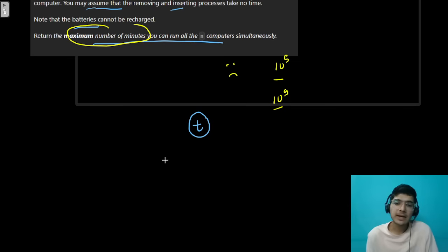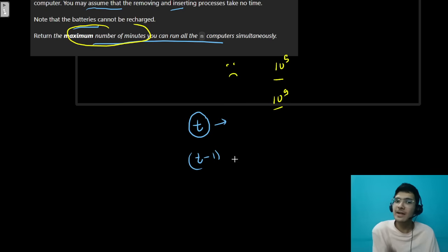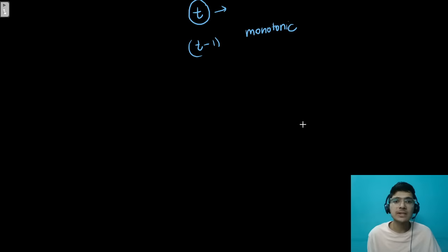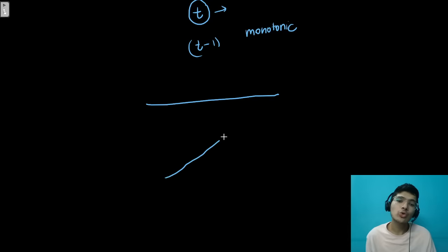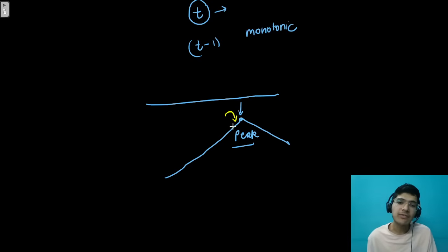To apply binary search on the answer, let's check the monotonicity. Suppose t is a valid time — can we run all computers for t minutes? If yes, can we run them for t-1 minutes? Definitely yes — if it can run for t time, it can definitely run for t-1 time. That means it's monotonic: true, true, true... up to a peak, then false. We have to find this peak point using binary search on answer.